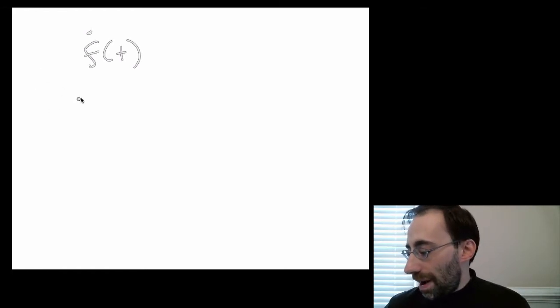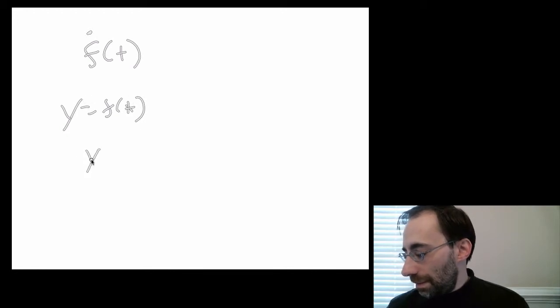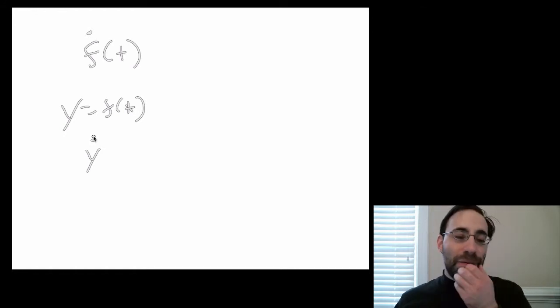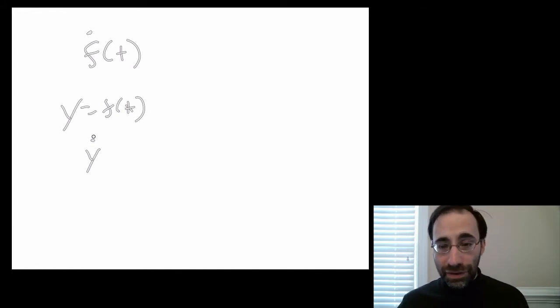So if y equals f of t, then y dot would be the rate of change. Now most things in political science never use this. It's only used for time, so you're not going to see that very much. But if you do see it, the dot means derivative sometimes.